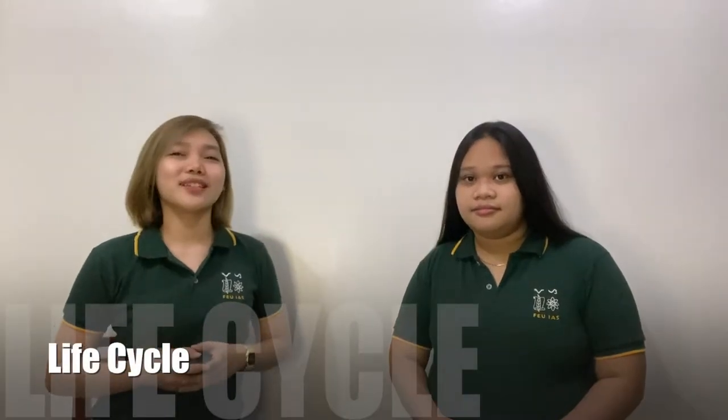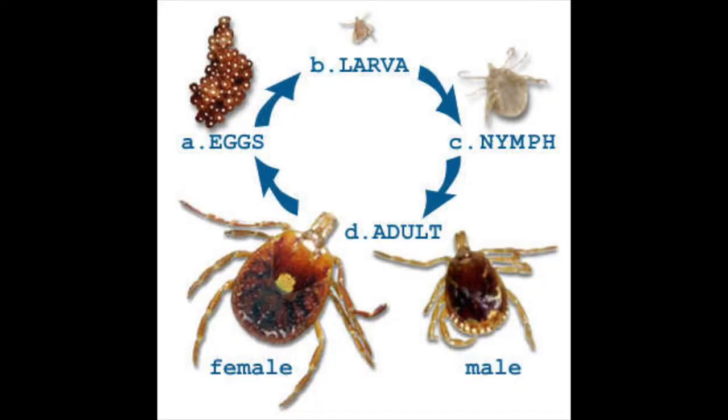Both ixodid and argasid ticks have hemimetabolous life cycles — that is, there is incomplete metamorphosis involving a larval and nymphal stage. Adult ixodid ticks remain attached to their host for long periods, as blood feeding often lasts one to four weeks. After feeding, the enormously engorged tick drops from the host to the ground and shelters.